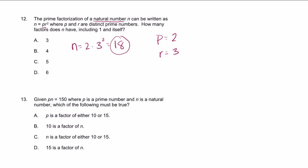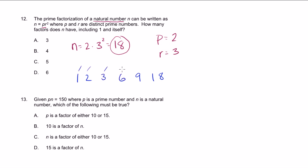How many factors does 18 have? Let's factor it out. It's got 1 and 18, 2 and 9, and 3 and 6. So it's got 1, 2, 3, 4, 5, 6 factors. So the answer is D.